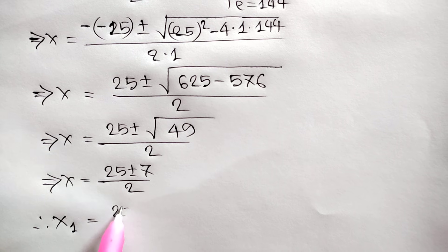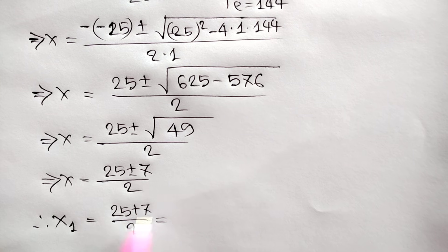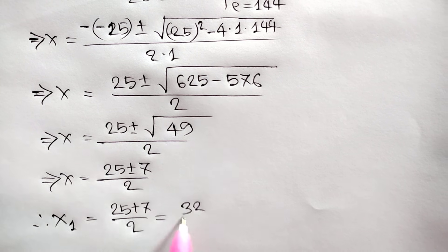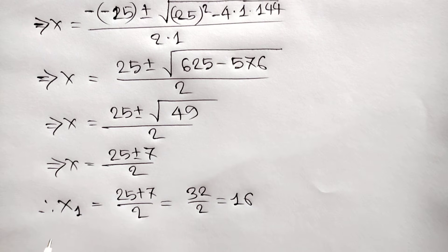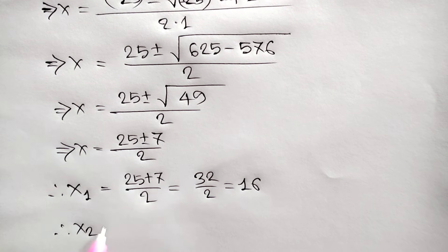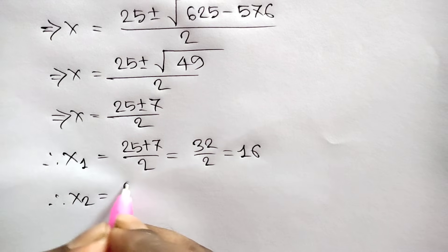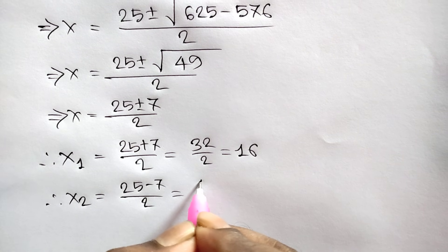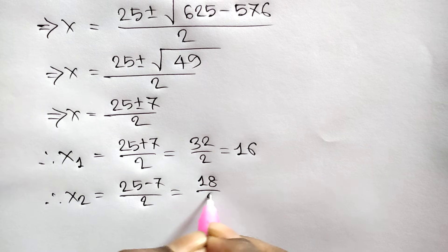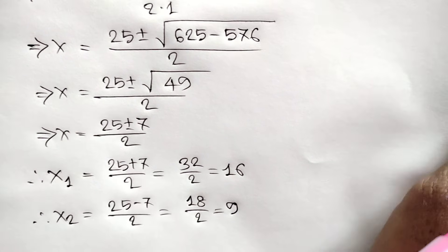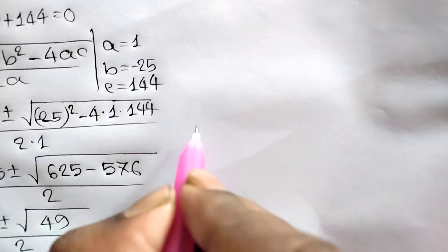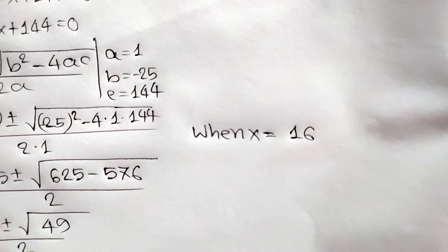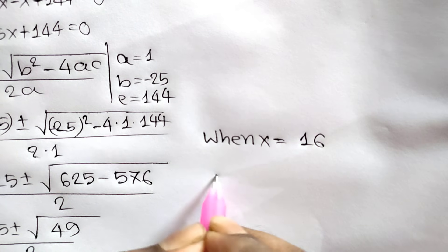So we will get two values of x. x₁ is equal to 25 plus 7 over 2, which is 32 over 2, equal to 16. And x₂ is equal to 25 minus 7 over 2, which is 18 over 2, equal to 9.